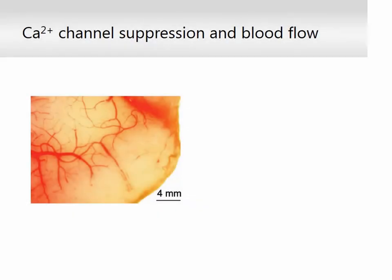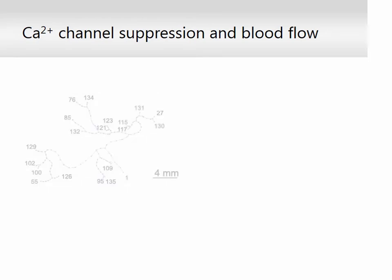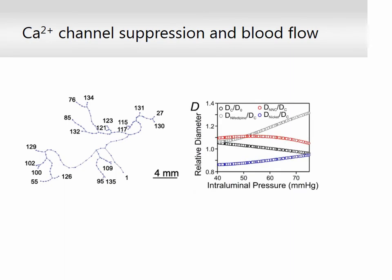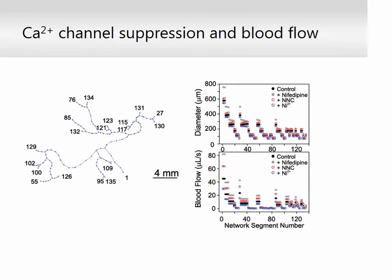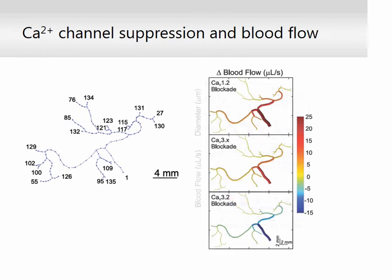Myography experiments showed that calcium channel subtypes elicited divergent vasomotor effects in human cerebral arteries. Particularly, CAV1.2 and CAV3.3 augmented, but CAV3.2 counterbalanced, myogenic constriction. To conceptually ascertain how each channel subtype could influence cerebral blood flow, a computational model was developed in which intraluminal pressure was variable and pressure-diameter relationships from isolated human vessels were integrated. Color-coded virtual networks indicated that suppression of CAV1.2 and, to a lesser extent, CAV3.3 enhanced network blood flow in a pressure- and diameter-dependent manner, while CAV3.2 inhibition constricted arterial segments and decreased cerebral blood flow.